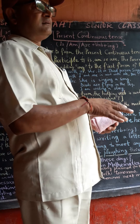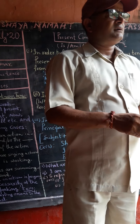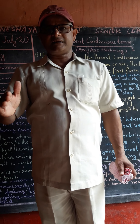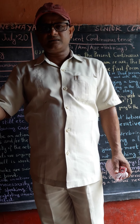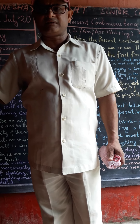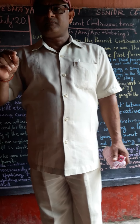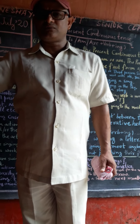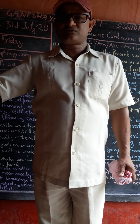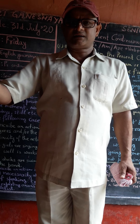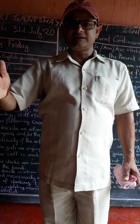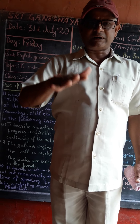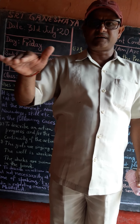In Hindi, its identification is: 'raha hai', 'rahi hai', 'rahe hai' — at the end of Hindi sentences. For example, 'Main school ja raha hai' means 'I am going to the school.' 'Wah khel raha hai' means 'He is playing.' 'Tum padh rahe ho' means 'You are reading.'